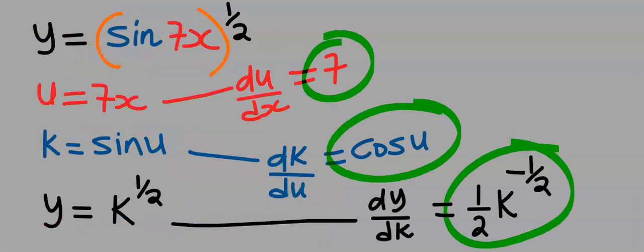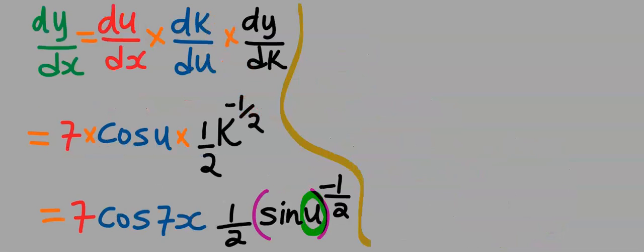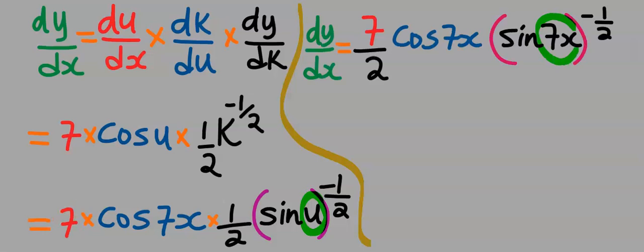According to our initial assumption, we replace the value of u and k. After replacing u and k, this is our dy/dx.